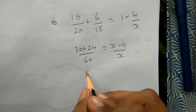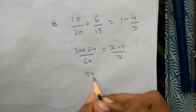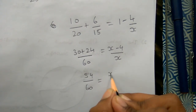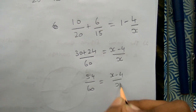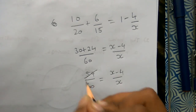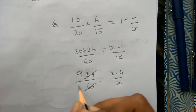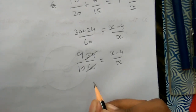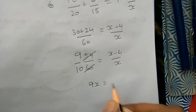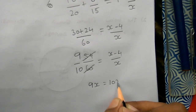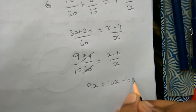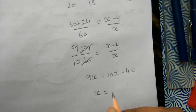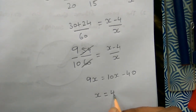Here is 54 by 60, here is x minus 4 by x. Cancel it: 9 over 10. Next one is 9x equals 10x minus 40. Now x equals 40.